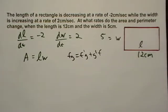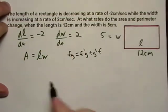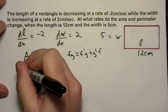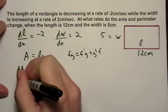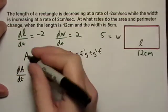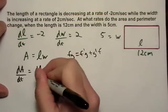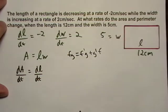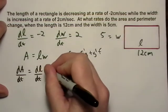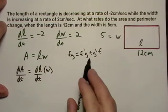So let's just go ahead and do that. So I want the derivative of the area with respect to time, so that's just going to be dl over dt times w, just using this rule again.